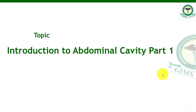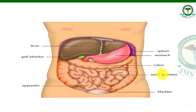Today we will discuss the introduction to abdominal cavity, part one, because it's a lengthy topic so we'll discuss it in two parts. Look at this diagram — it generally shows the location and position of the abdominal cavity. Before going further, we know that there are body cavities in the body, and the common and important ones are the thoracic cavity, abdominal cavity, pelvic cavity, and spinal cavity.